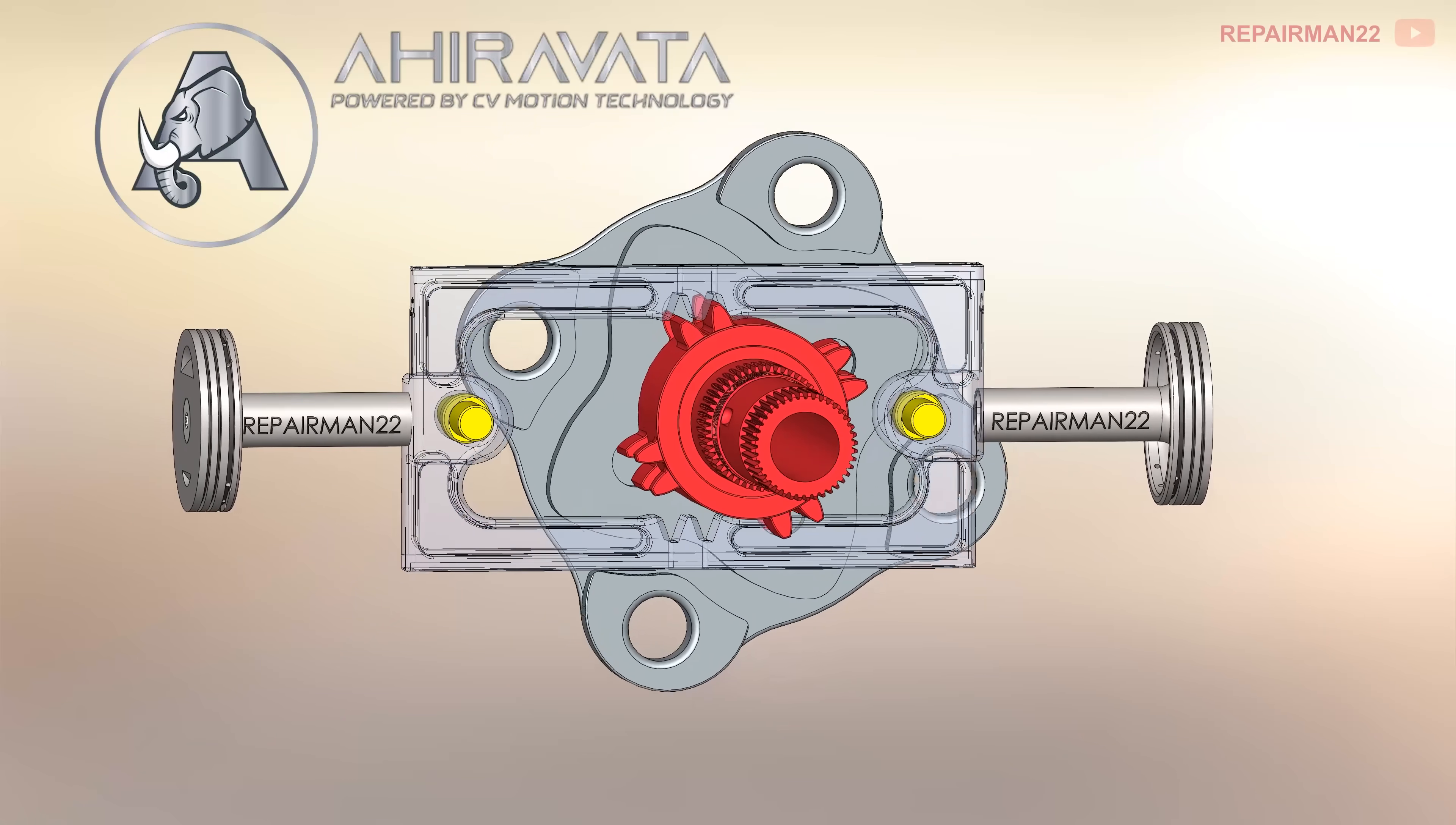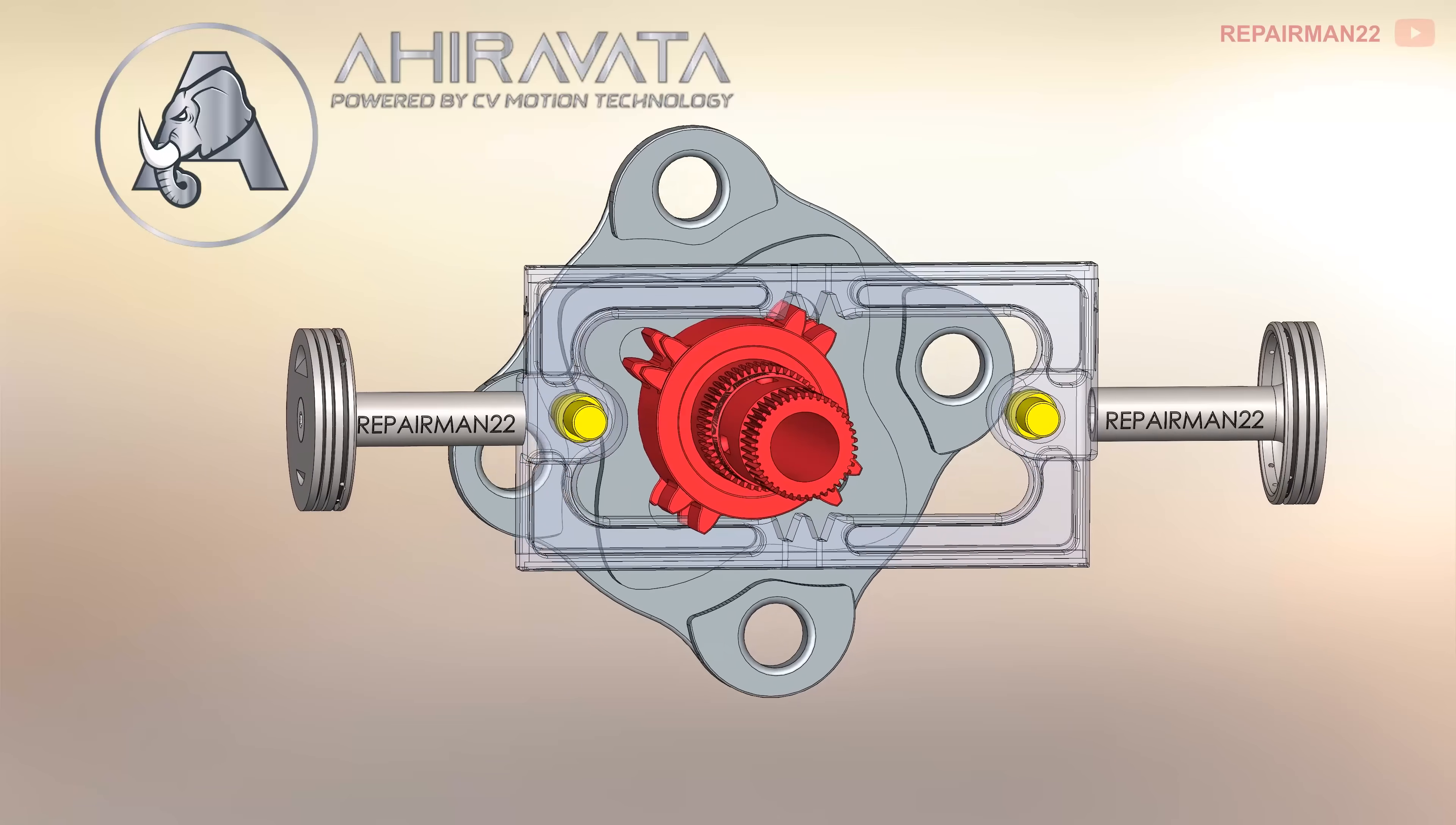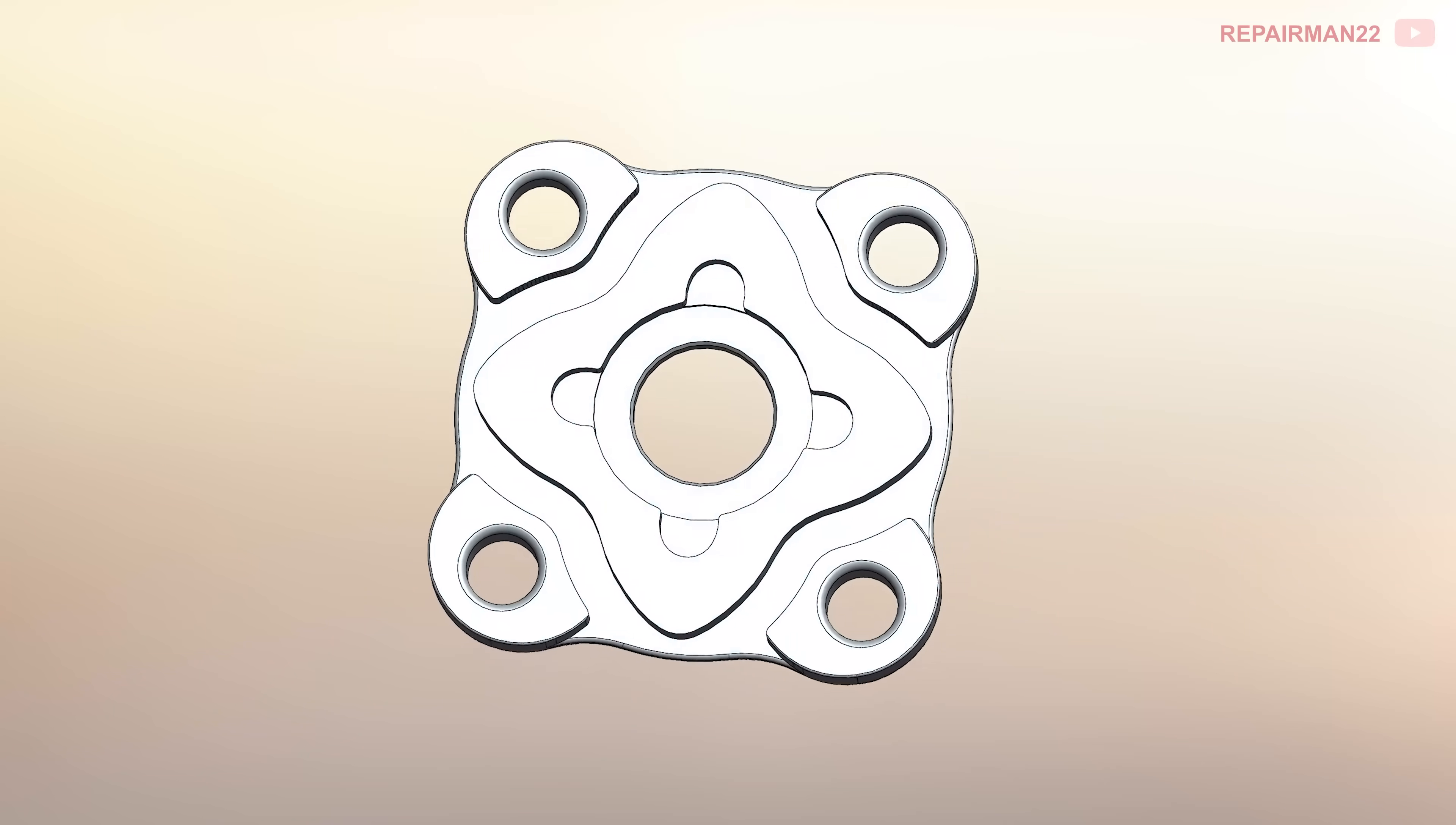This is the Ahiravata engine, an engine without a crankshaft, which moves as shown in the video. Its main component is the flower, and it provides movement at a constant speed to the output shaft.